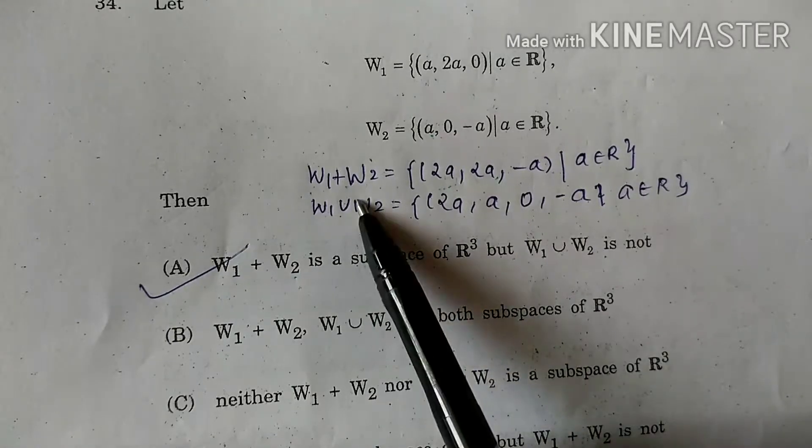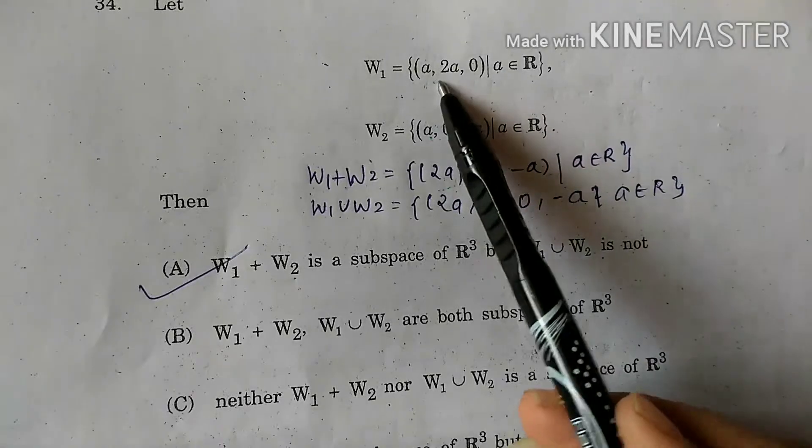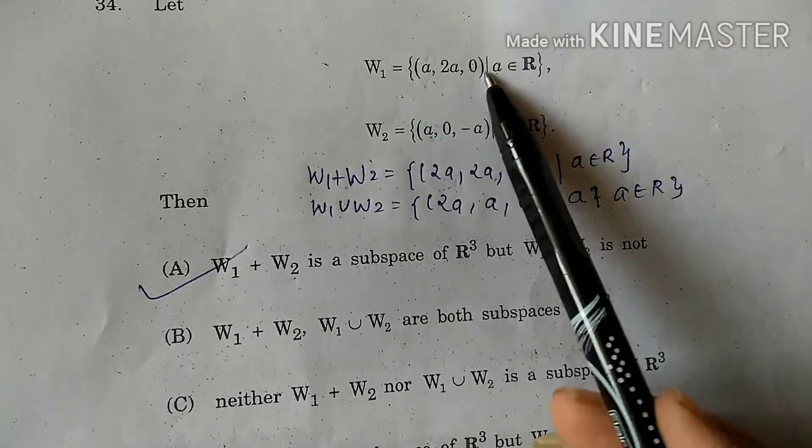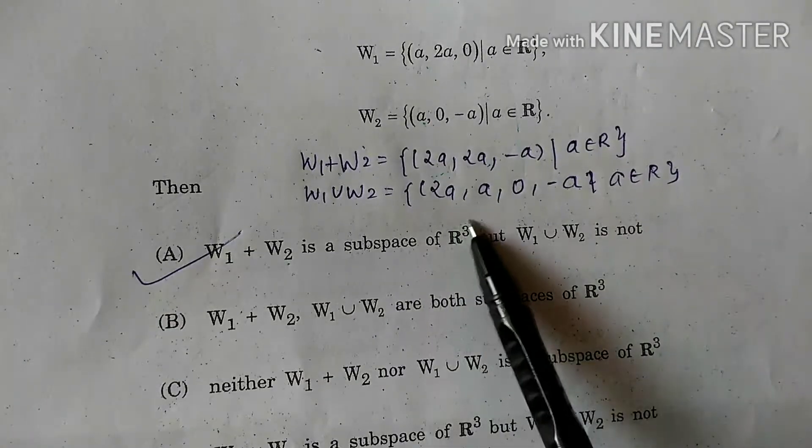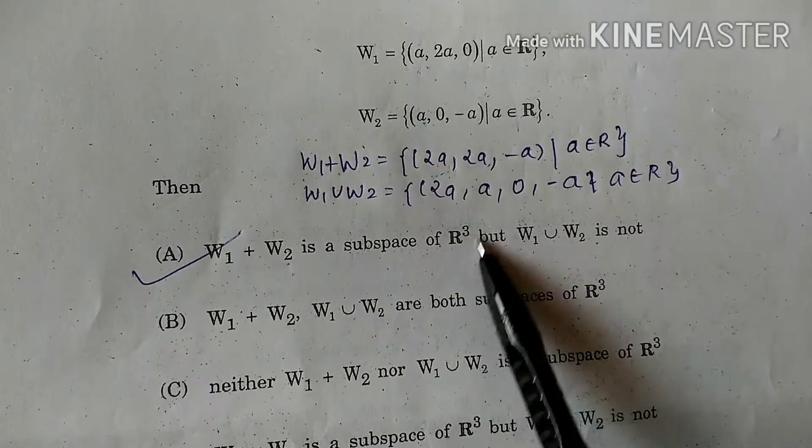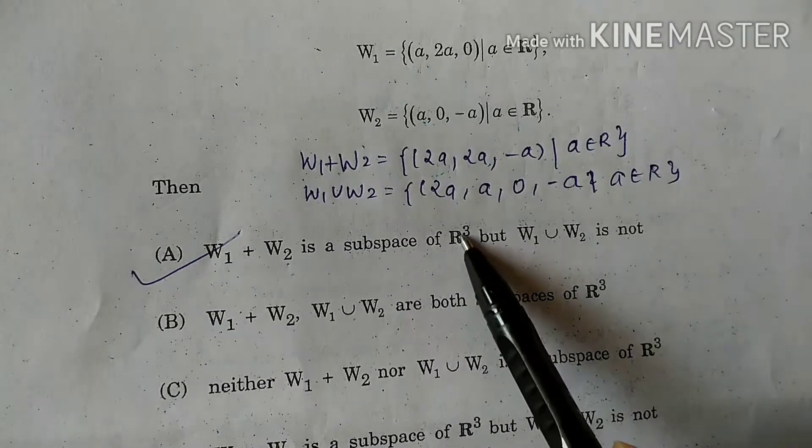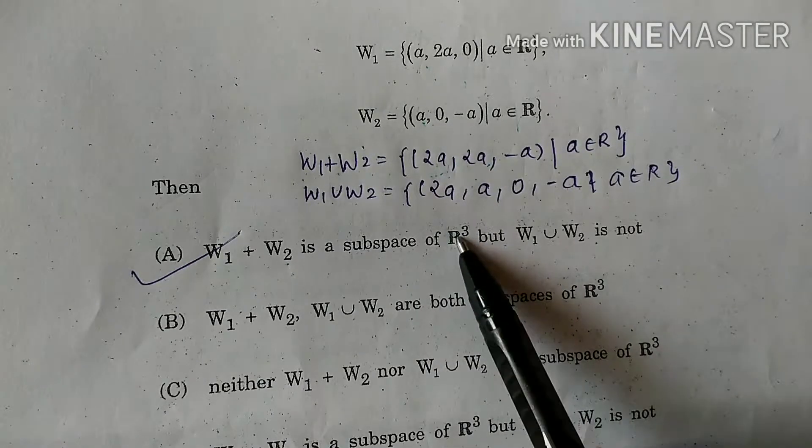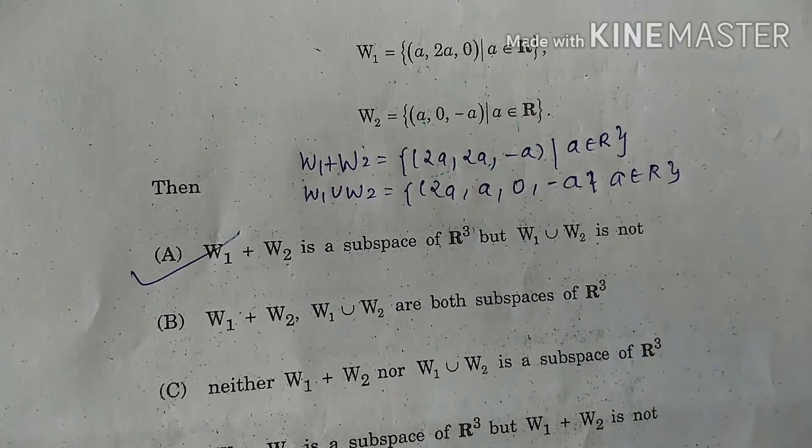Now for the union, W1 union W2. So union, we are going to include a 0 minus a. This is a 4-dimension, we are going to include a 4-dimension, which means the dimension would be 4.